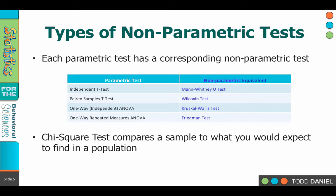For each of the parametric tests that we have learned, there is a non-parametric alternative or equivalent. For instance, the independent samples t-test has a non-parametric equivalent called the Mann-Whitney U test. For the paired samples t-test, we could do the Wilcoxon test instead. One-way ANOVA is matched by the Kruskal-Wallis, and a repeated measures ANOVA is matched by Friedman's test. So no matter the parametric test we've learned, there's a non-parametric approach.